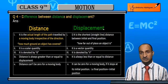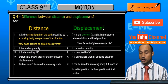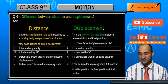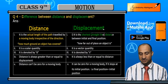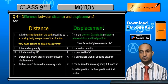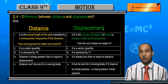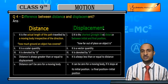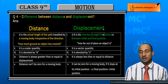Displacement is the shortest distance — it is the straight line between the initial and the final position. We call this the shorter distance between the final and initial position, and this shortest distance is always a straight line.